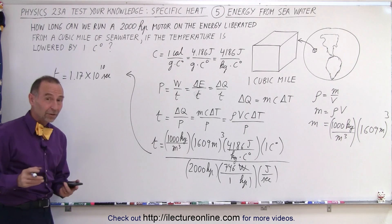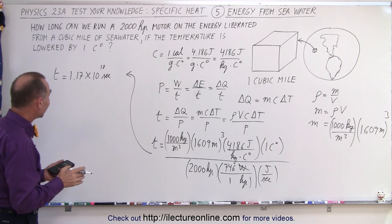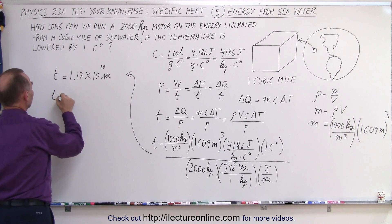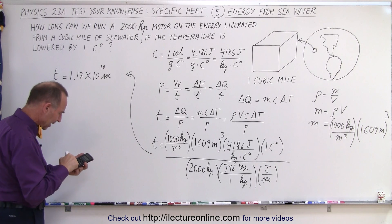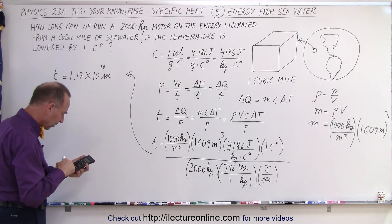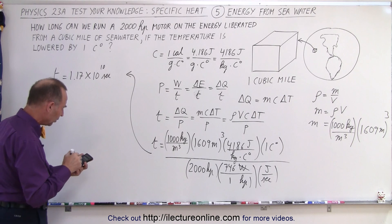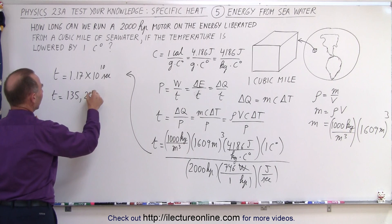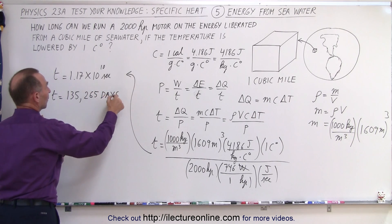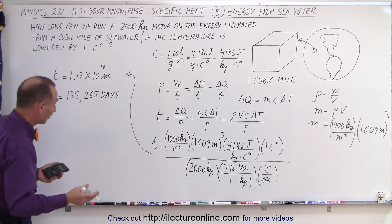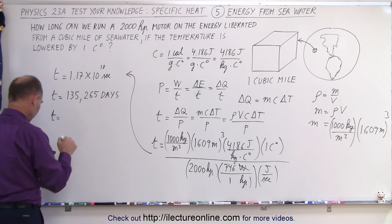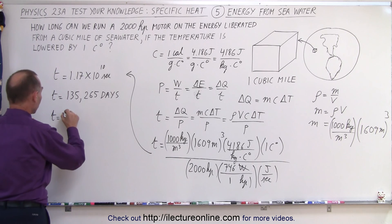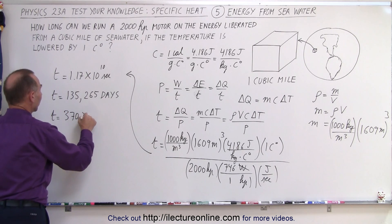Of course, that doesn't tell us much, so we're going to convert that into days. So the time is equal to, we divide by 86,400 seconds in a day, so that would give us 135,265 days. And if we convert that to years, there's 365 days in a year, or 365 and a quarter, so divide by 365.25, and we get a total of about 370 years.